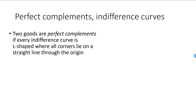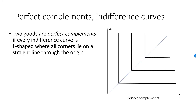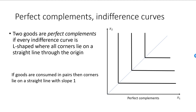Let's do a quick review. Two goods are perfect complements if and only if every indifference curve is L-shaped and all corners line up on a straight line through the origin. If the goods are only consumed in pairs, such as a left shoe and a right shoe, then the slope of this straight line will be equal to one. If for every unit consumed of good one I consume two units of good two, then the slope is equal to two, and so on. In most cases, our goods will be in between perfect substitutes with straight indifference curves and perfect complements with L-shaped indifference curves.